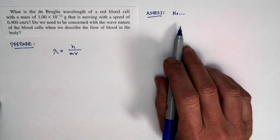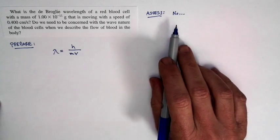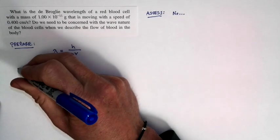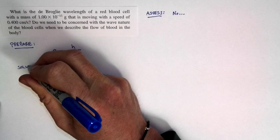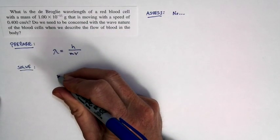So my assessment is I expect the number that we get for the wavelength to be rather small and not to be of substance. Let's go ahead and solve. We know the relationship we need to solve for, and we have all the numbers. The only thing we have to do is worry about units.